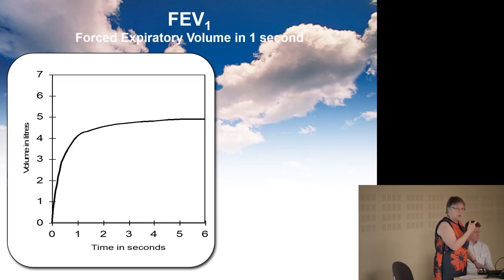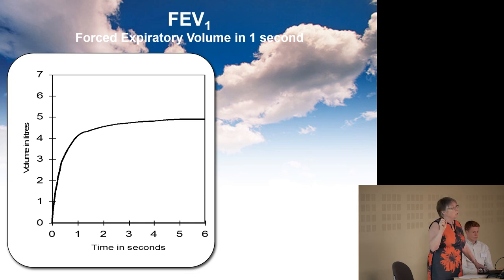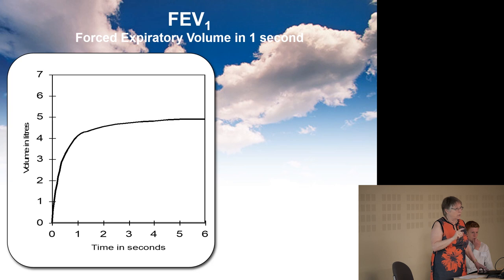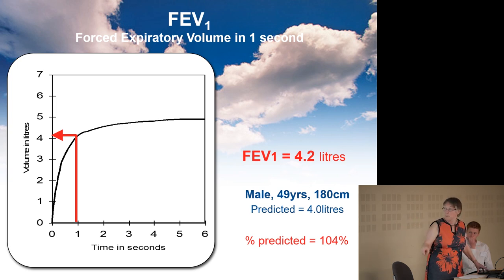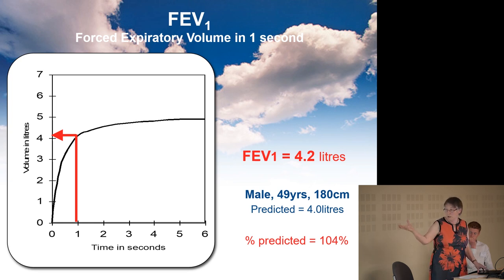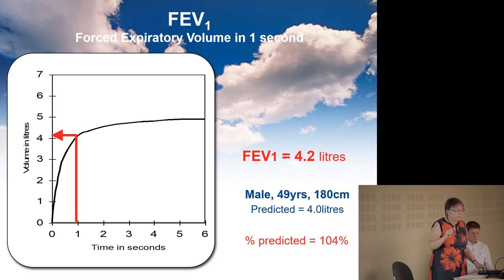So that's one measurement — forced vital capacity. The second is the forced expiratory volume in one second. What that is saying is it's the amount of air you can blow out in one second. In that first second, this particular person blew out a total of 4.2 litres, which was 104% of what you'd expect — a perfectly normal reading. That's the FEV1 that you see.